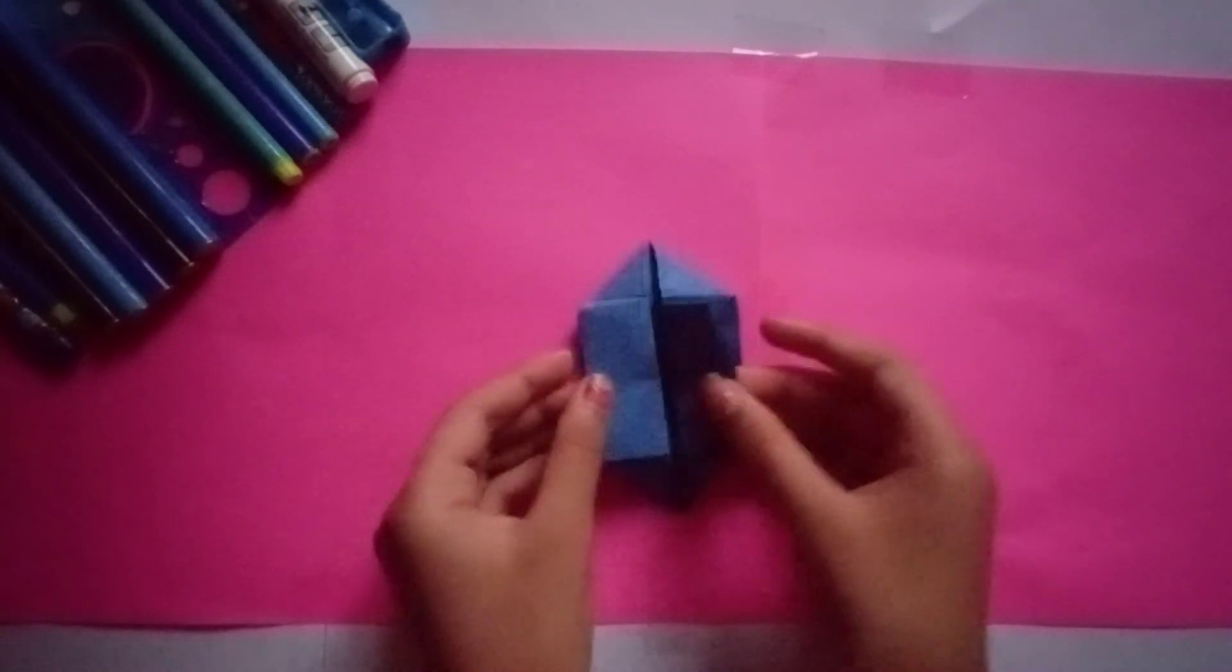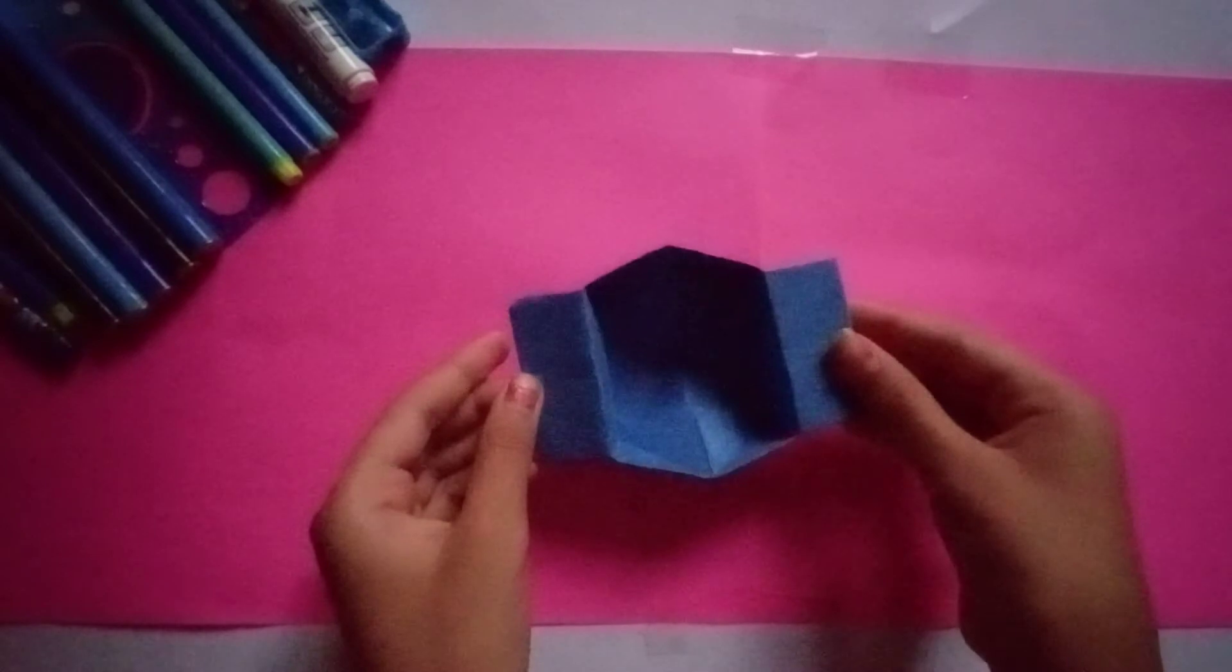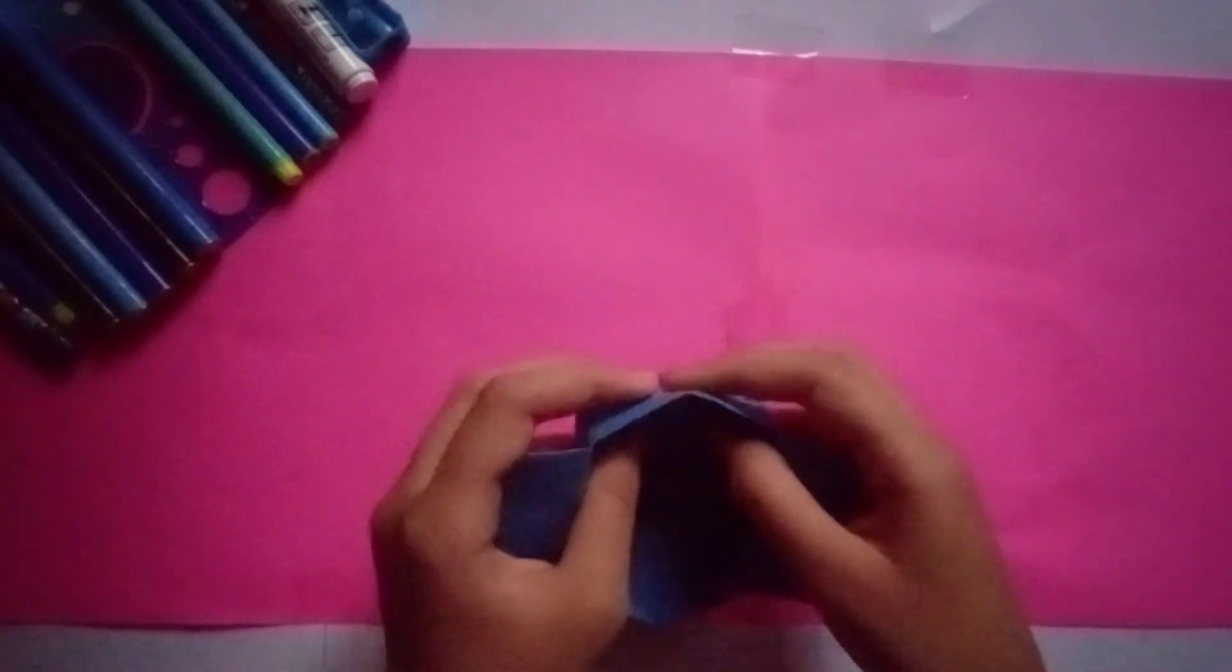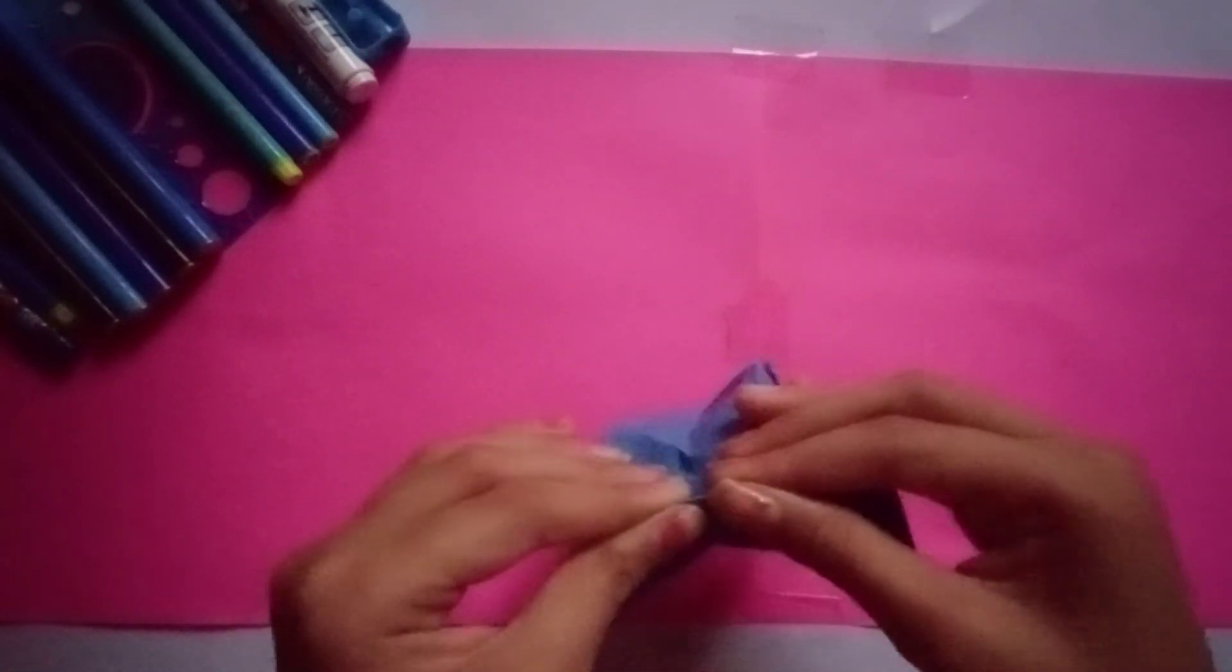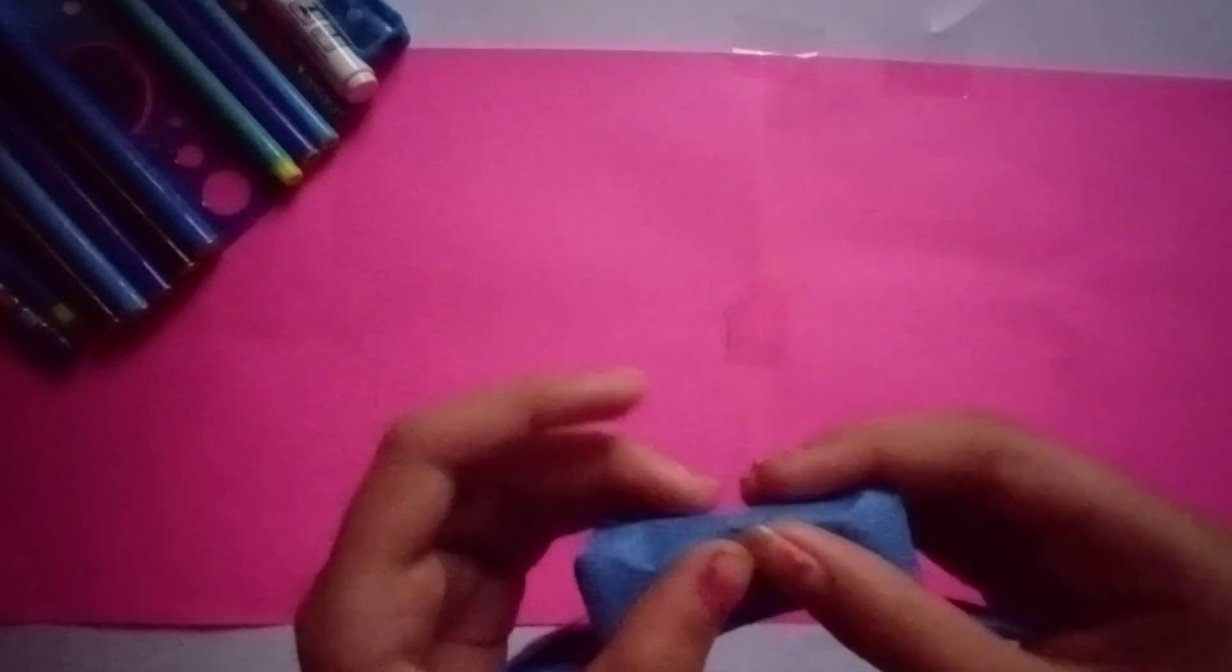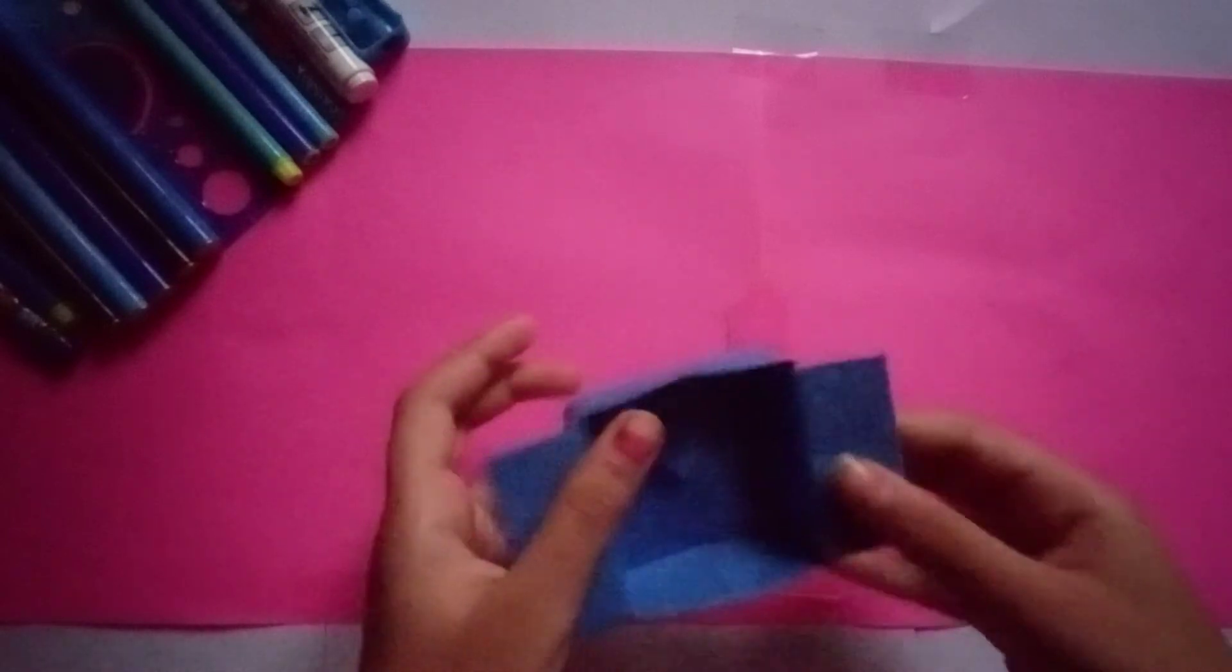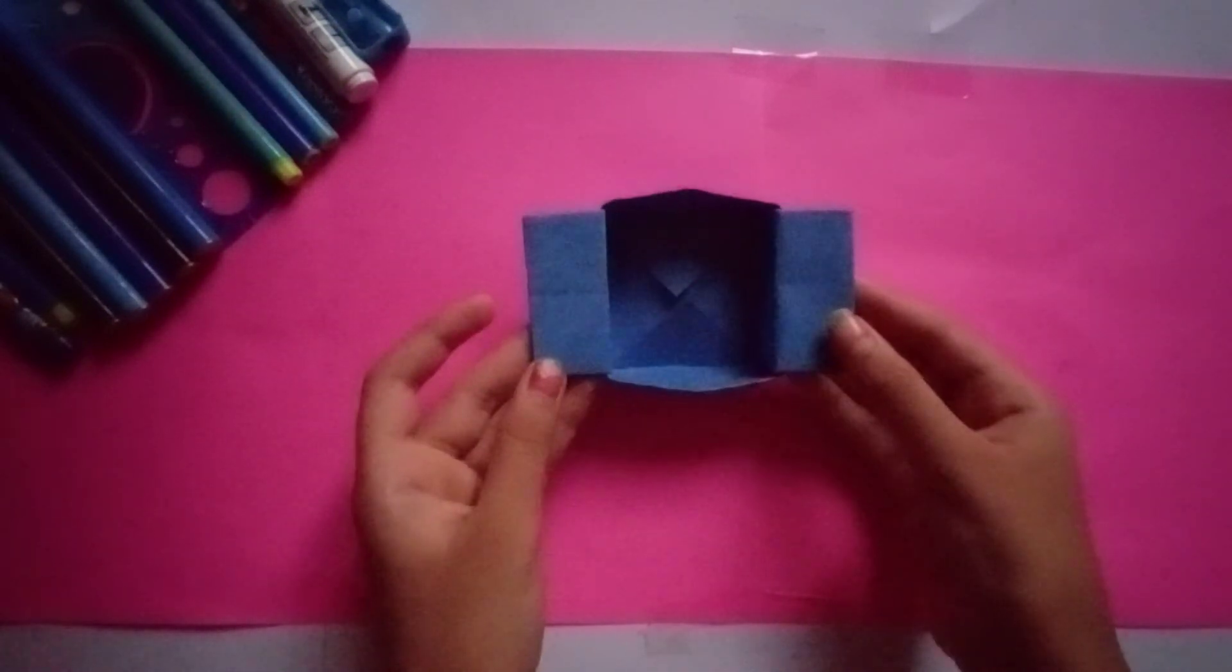Pull these two rectangles like this. And you will have your paper basket opened. You just need to fold it like this and give it a shape. And there we have it. A paper basket.